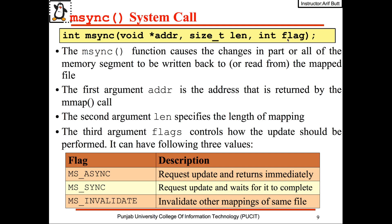The three options for the flags argument are: asynchronous update, synchronous update, or invalidate.